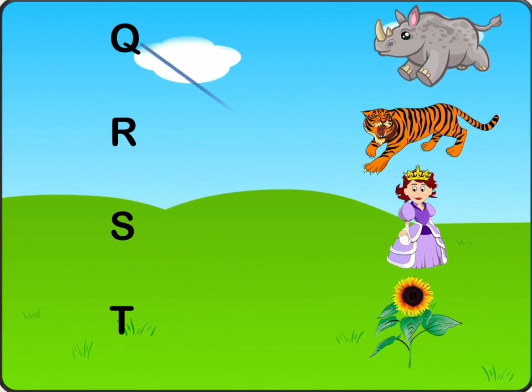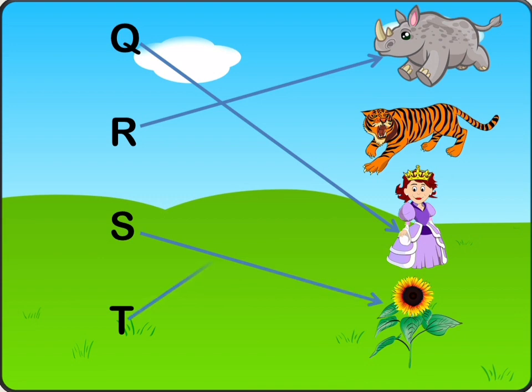Q is for Queen. R is for Rhinoceros. S is for Sunflower. T is for Tiger.